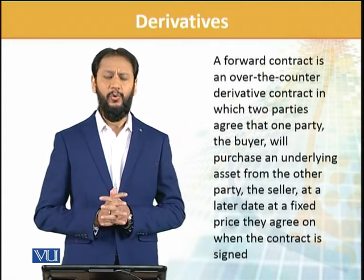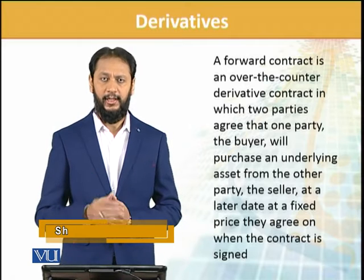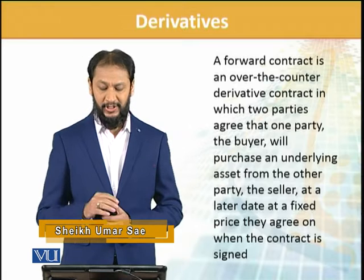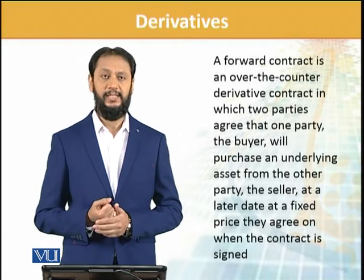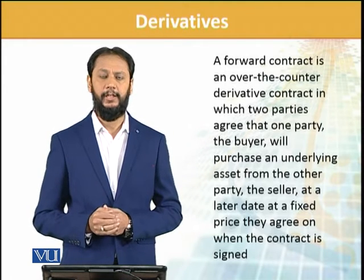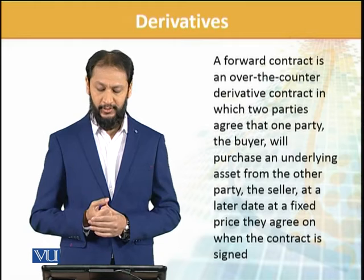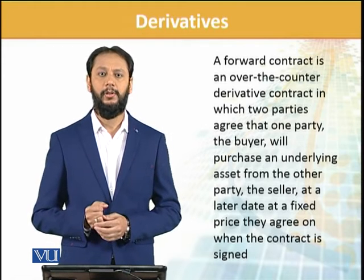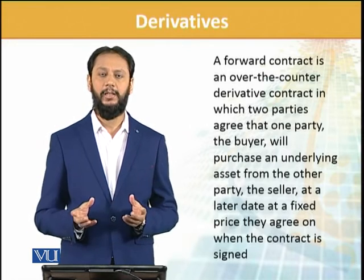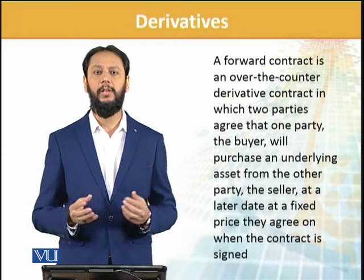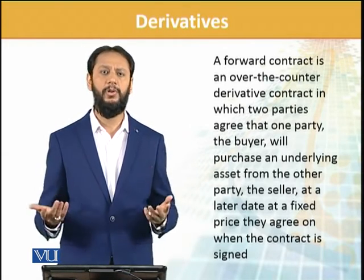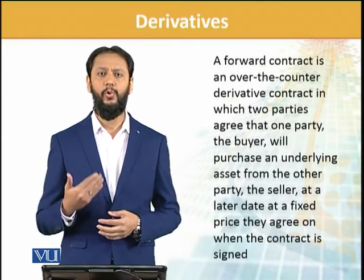A forward contract is an over-the-counter derivative in which two parties agree that one party will be the buyer, who will purchase an underlying asset from another party — the seller — at a later date at a fixed price that is agreed when the contract is signed. Over-the-counter کا مطلب یہ ہے کہ ایک client کے لیے یہ specific چیز build کی جا رہی ہے — یہ جو دو parties میں contract ہو رہا ہے، یہ exclusively ان کے درمیان ہو رہا ہے۔ یہ کوئی standard terms نہیں ہیں — یہ کسی بھی amount کا ہو سکتا ہے، کسی بھی period کا ہو سکتا ہے۔